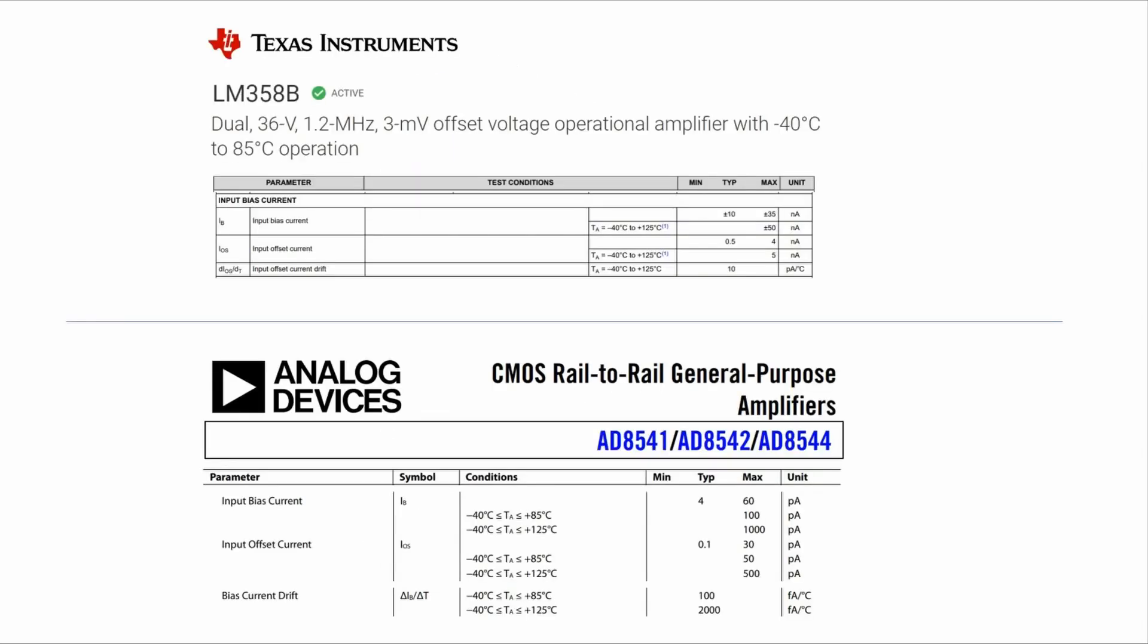Input bias current and input offset current are both values that you will find on a datasheet, as you can see here from these snapshots of datasheets of op-amps from Texas Instruments and Analog Devices. These datasheets give you ranges of values, including a maximum, and you can see that they also change with temperature.